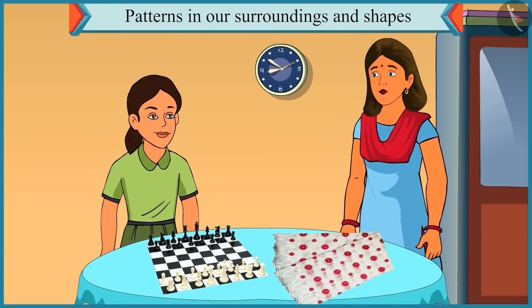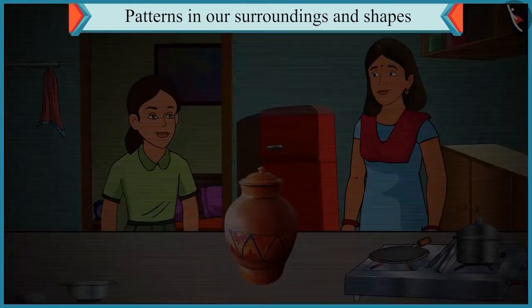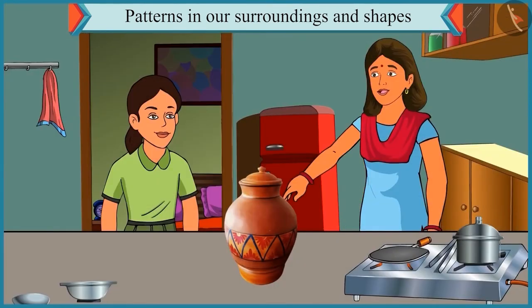Chutki, come on. Now let's go to the kitchen. Okay. Let's go. Now look. A pattern is made using triangles on this pot of water. Oh yes.